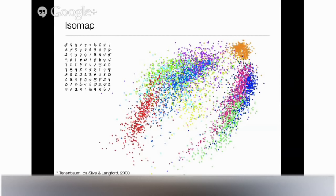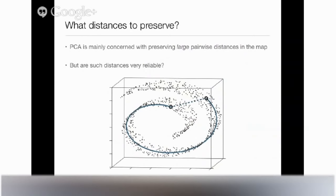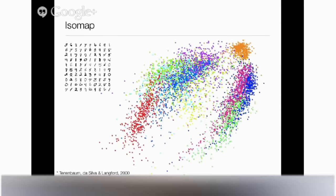People realized this around 2000 and started coming up with techniques focusing on preserving local structure and small pairwise distances. An example is Isomap, which tries to estimate distances between points via geodesic distance — the distance over the manifold — and then uses those distances as input into PCA. This gives a somewhat better embedding; for instance, the cluster of ones is fairly well separated from the rest of the data. But even here, if you took out the colors, you wouldn't see much structure.